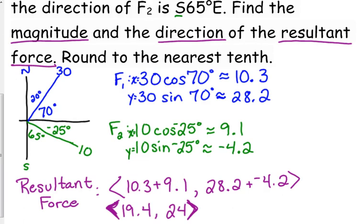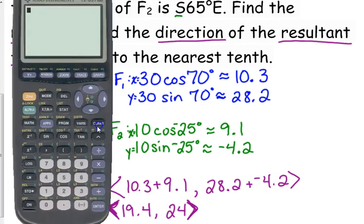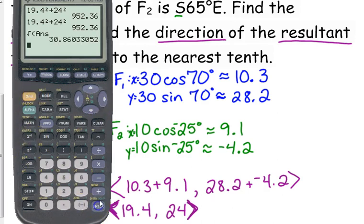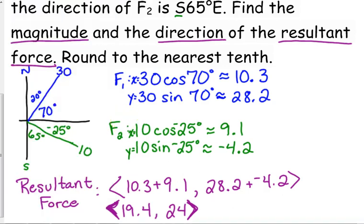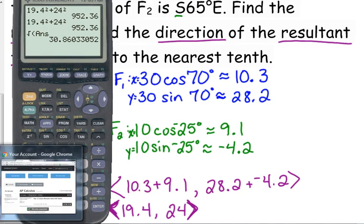30 pounds versus 10 pounds. It makes sense that it should be more in that direction than in the other direction. But we're still not quite finished. We want the magnitude. That's just the components. Yes, I know these problems get a little long. But you've got to keep your eye on what it actually wants. So, square the X, square the Y, add them together, take the square root. So, the resultant force, the actual magnitude of that force, is 30.9 pounds.